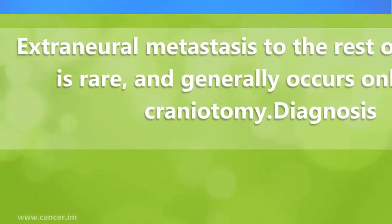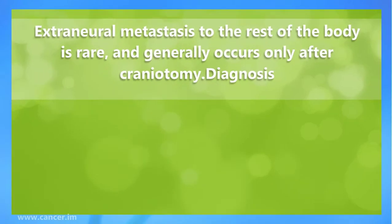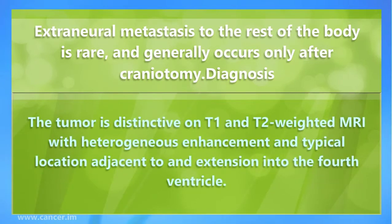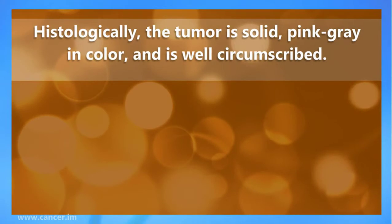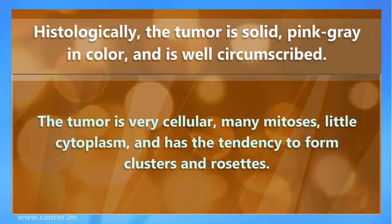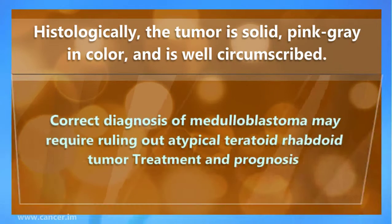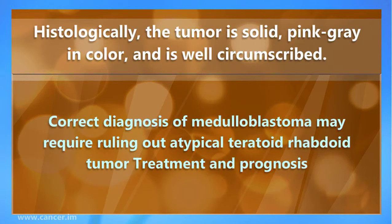Extraneuronal metastasis to the rest of the body is rare and generally occurs only after craniotomy. The tumor is distinctive on T1 and T2 weighted MRI with heterogeneous enhancement and typical location adjacent to or with extension into the fourth ventricle. Histologically, the tumor is solid with a pink-grey color and is well circumscribed. It is very cellular with many mitoses, little cytoplasm, and has the tendency to form clusters and rosettes.